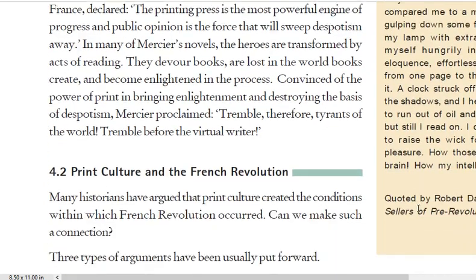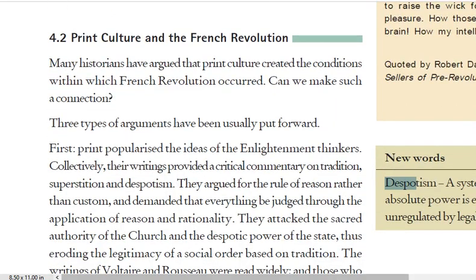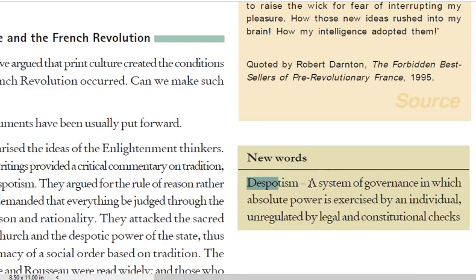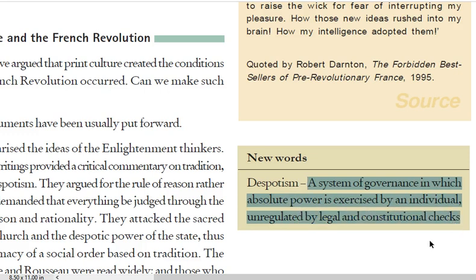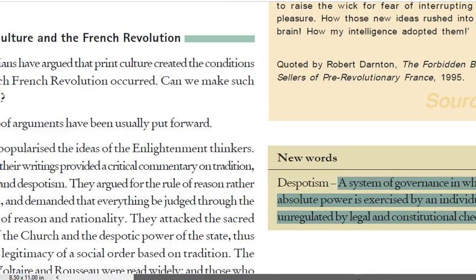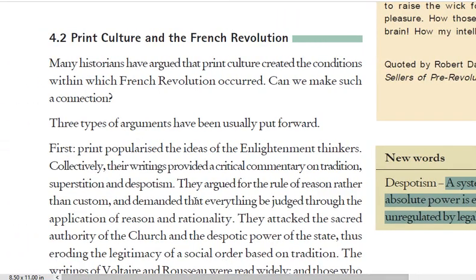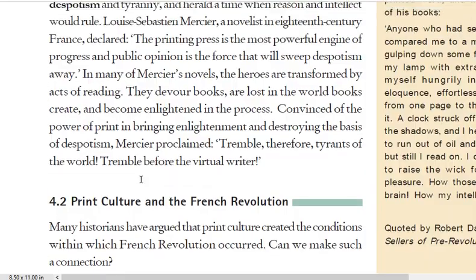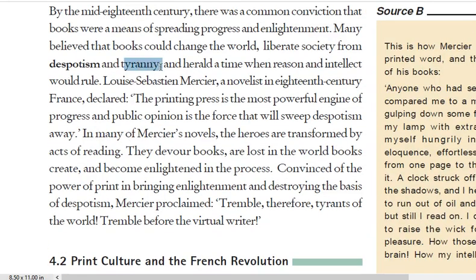Despotism means a system of governance in which absolute power is exercised by an individual, unregulated by legal and constitutional checks. It is a system where all power is in the hands of one individual who is above any law. Many believed that books would herald a time when reason and intellect would rule.